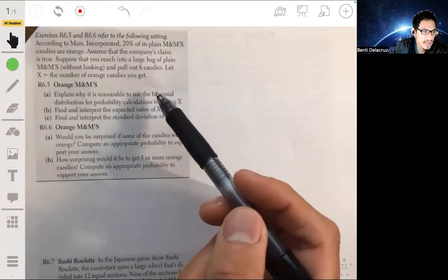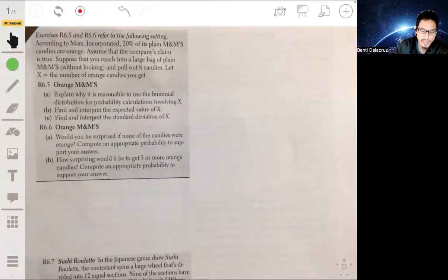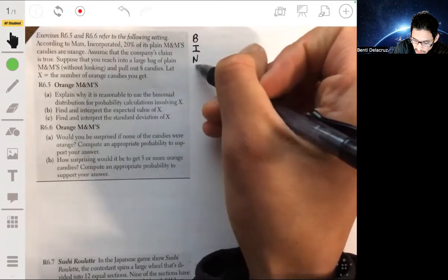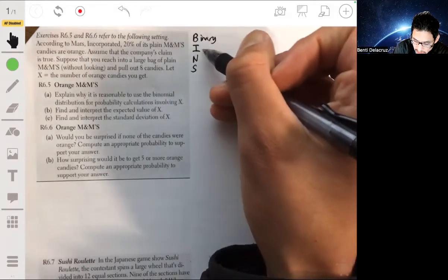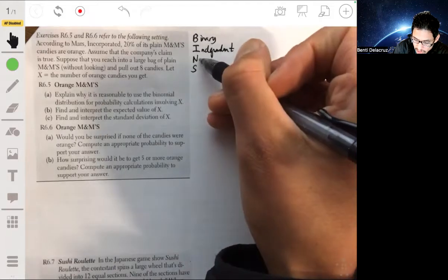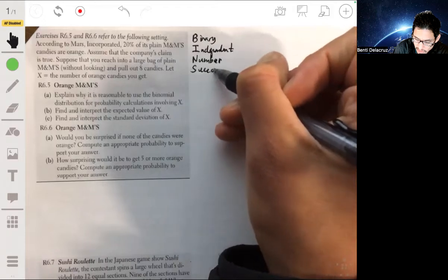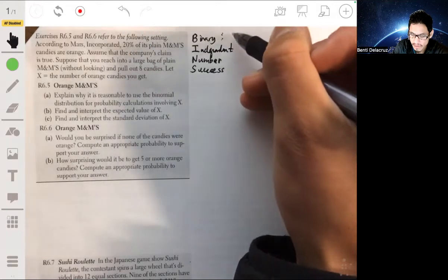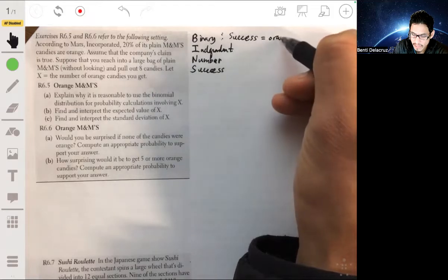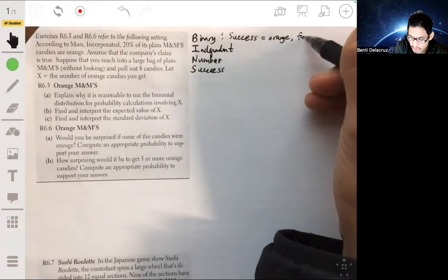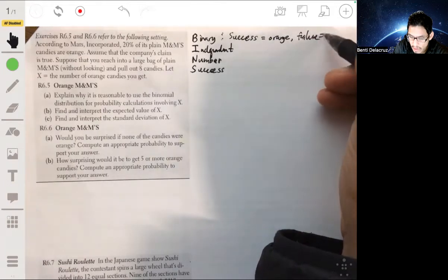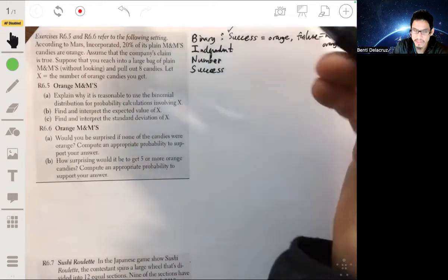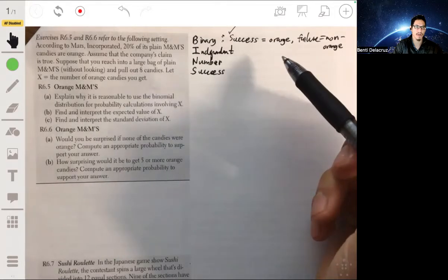Explain why it is reasonable to use the binomial distribution for calculations involving X. We have to show that this is a binomial random variable. So we check the BINS: check that it's binary, check that the trials are independent, check that there's a fixed number of trials, and check the success probability is always the same on each trial. The first one is binary. So is there a clear defined success and failure? Success would be orange candy, and failure would be non-orange.